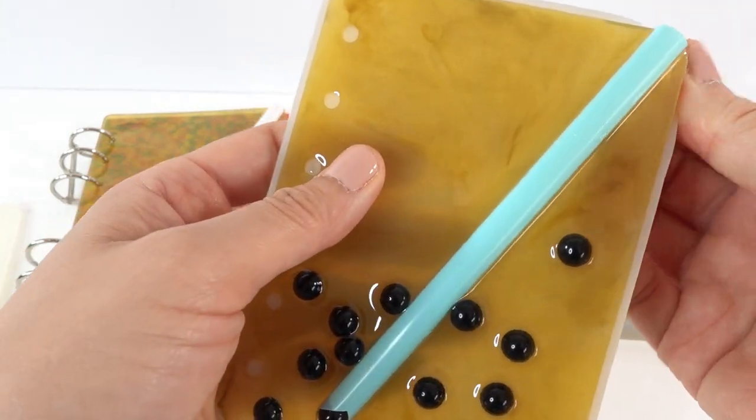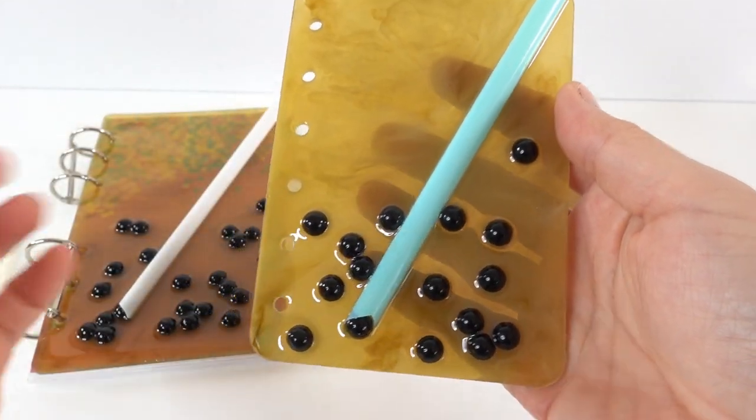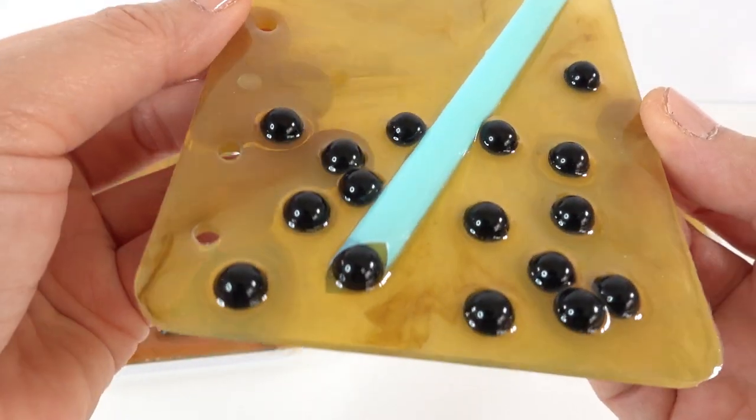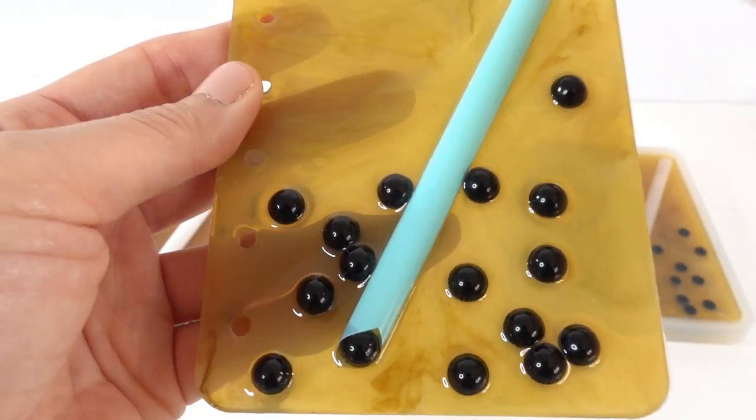Okay, next we have this smaller notebook. So this is just a smaller version of the other one. This one also looking really great. I love that we have the boba here. It's about to travel up the straw.